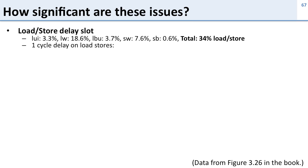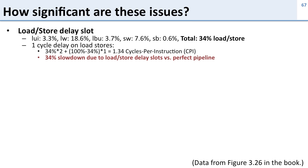We have a one-cycle delay on loads and stores, so what's the performance impact? Well, 34% of the time we're going to spend two cycles and the rest of the time we spend one cycle. This means we're going to have an average of 1.34 cycles per instruction — a 34% slowdown versus the perfect pipeline. In a perfect pipeline where we keep all slots full, we have one cycle per instruction; here it takes 1.34 cycles per instruction because of the load/store delay.